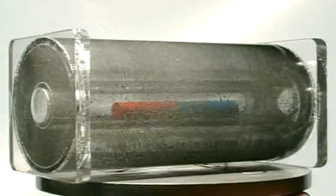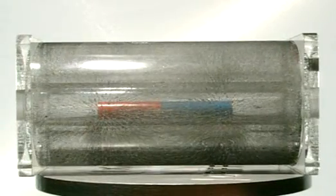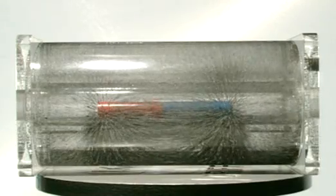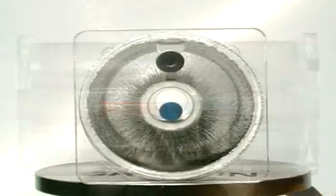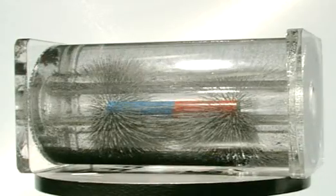This magnet is surrounded by iron filings suspended in a liquid. The magnetic field lines go all the way around it.